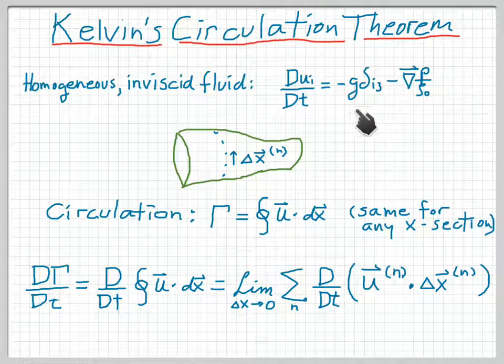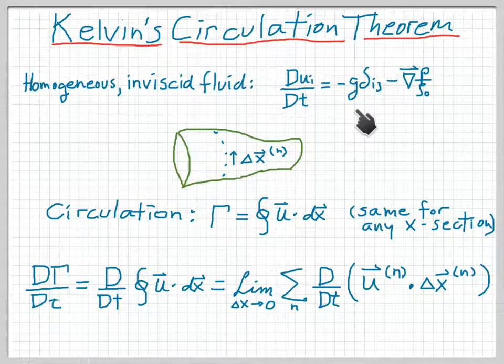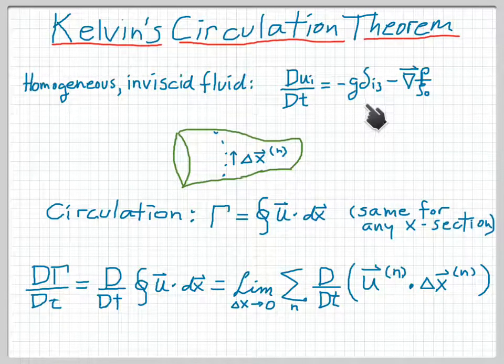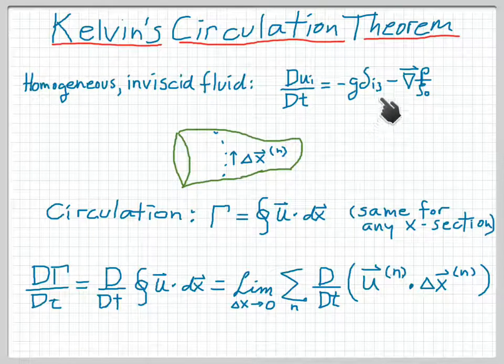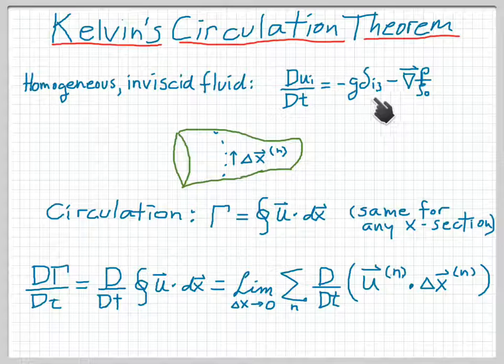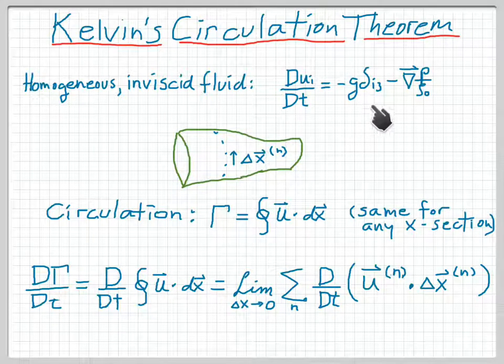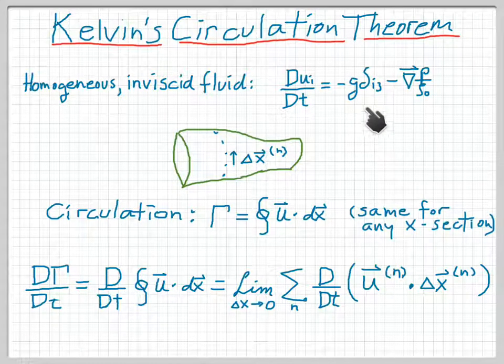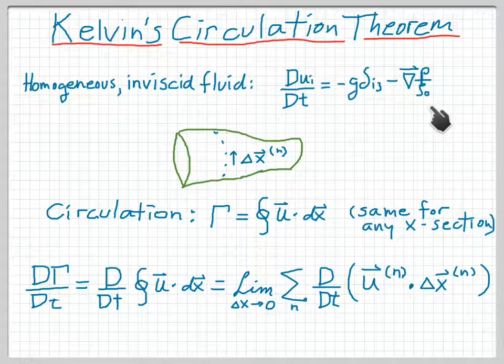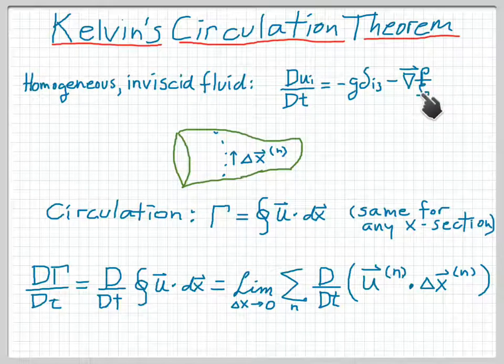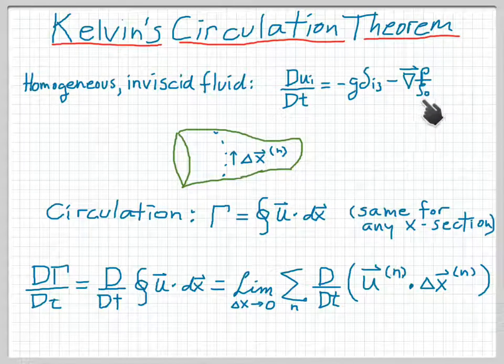is equal to the gravitational term. Notice that we've written gravity in a gravity-aligned coordinate system, so that the x3 direction is opposite to gravity, or what we would normally call upward, and then minus the pressure gradient. Because the fluid is homogeneous, the density here is just a constant ρ₀.